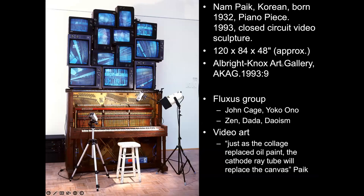This is Nam June Paik — Korean, but he became famous in the New York scene. He was part of what's called the Fluxus group, which included John Cage, an American composer, and Yoko Ono. The Fluxus group's idea was to make art that commented on and broke down the separation between art and viewer. When you go to a museum you look at one picture then move to the next — they thought that wasn't interesting enough. Instead they wanted to interact with the audience.